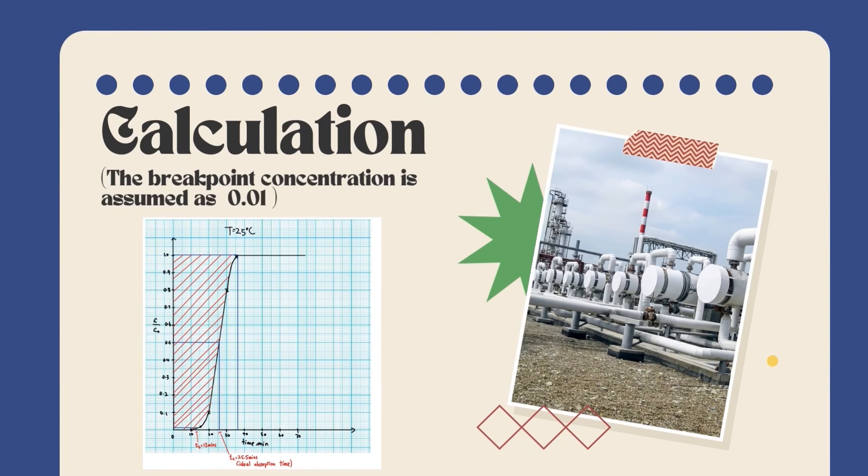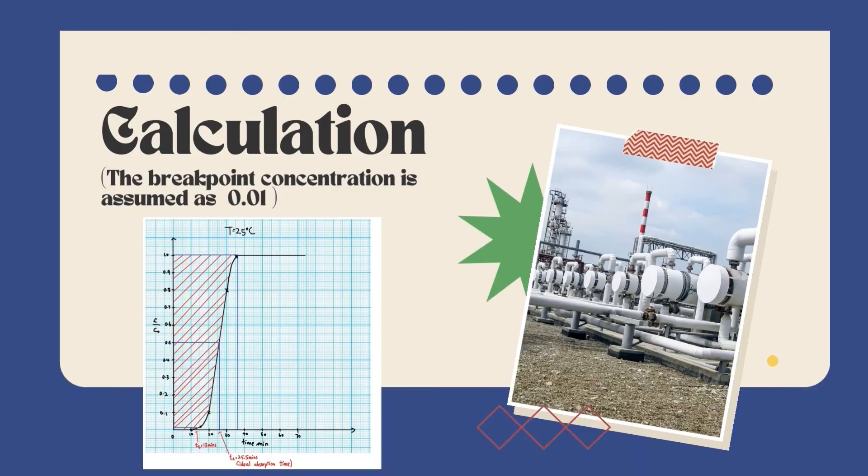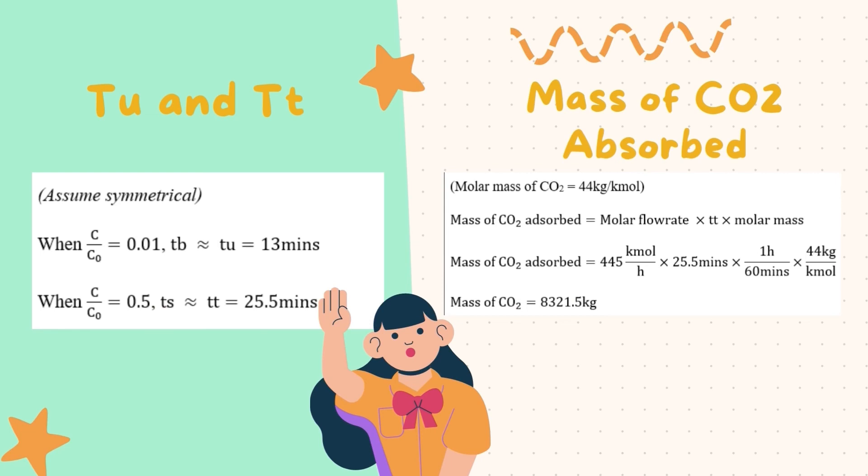Now I will briefly explain the calculation involved in designing of H2 enrichment unit. The graph shows the breakthrough curve of carbon dioxide adsorption by activated carbon at 25 degrees Celsius. So the breakthrough concentration is assumed as 0.01. After extrapolating the concentration breakpoint at 0.01, the time taken for it to occur is at 30 minutes. The ideal adsorption time can be calculated by extrapolating the concentration curve at 0.5, where the value of t₀ is 25.5 minutes. Next, to perform the calculation of carbon dioxide to be absorbed, given the molar mass of carbon dioxide is 44 kg per kilomole, the mass of carbon dioxide can be calculated by the product of molar flow rate, Δt and molar mass. So the mass of carbon dioxide to be absorbed is 321.5 kg.